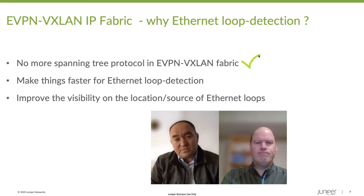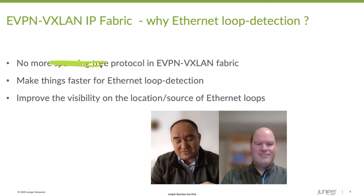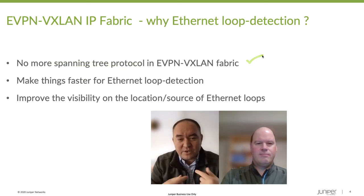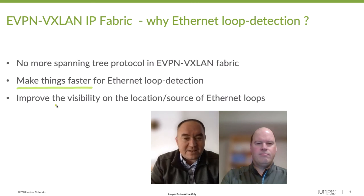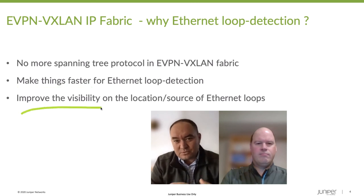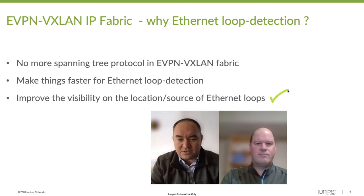Yeah, so the main points are: I don't want to see spanning tree in my EVPN VXLAN fabric anymore, because if I'm buying or building a new EVPN VXLAN fabric, it's not to enable spanning tree at the access again. So we don't want to do that. We believe that using the IEEE standard CFM loop detection protocol, we are just doing better things. We improve the speed at which we detect these loops in case of an error, and we improve the visibility on the sources of these loops. Having a tool set which gives you that information is very important, because you can quickly fix these errors.